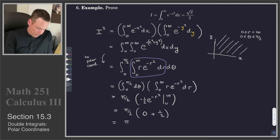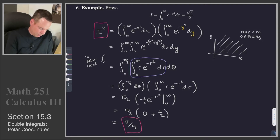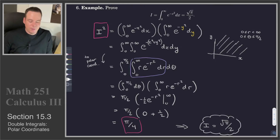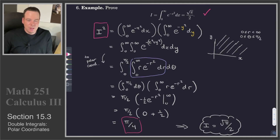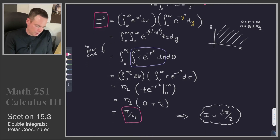So this works out to be pi over 4. That tells us I squared equals pi over 4, and therefore I equals the square root of pi over 2. We have found the value of that integral — we proved it equals root pi over 2. We did it by stepping up the dimension and switching to polar coordinates, because that made it easier to work out. That's the power of the tools we're developing in Calculus 3: they can help us solve problems in lower dimensions if we look at them in the right way, power them up into higher dimensions, and then reinterpret the result.